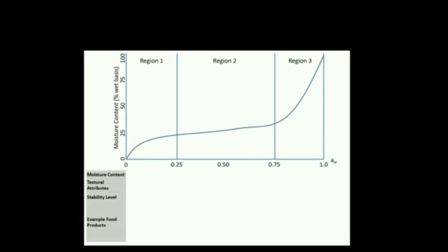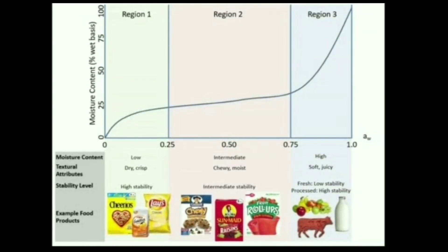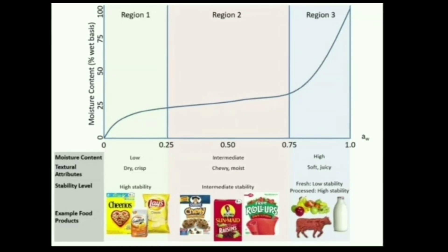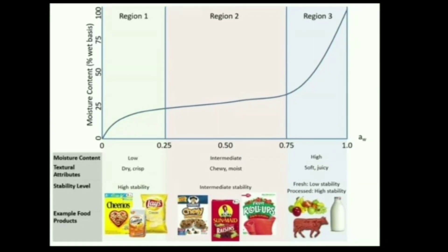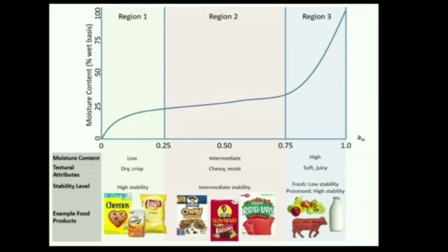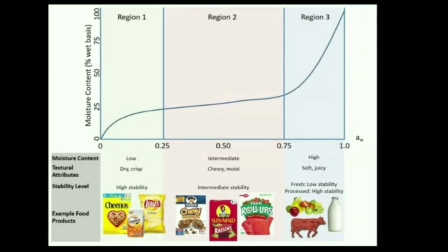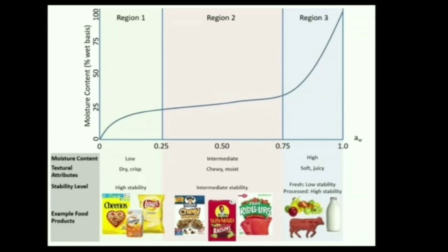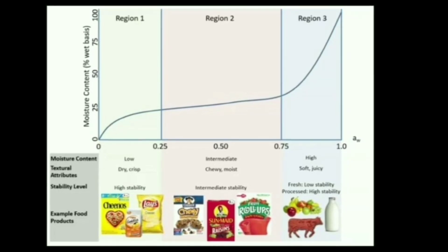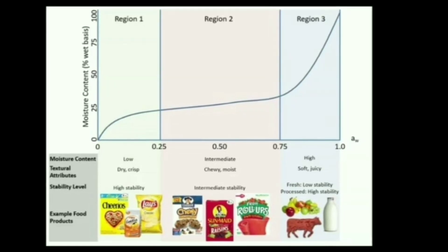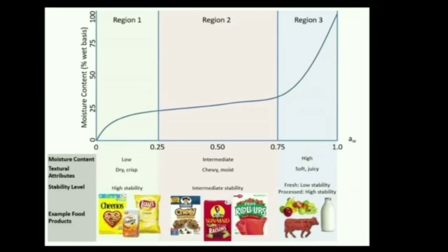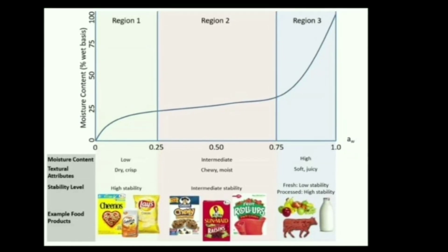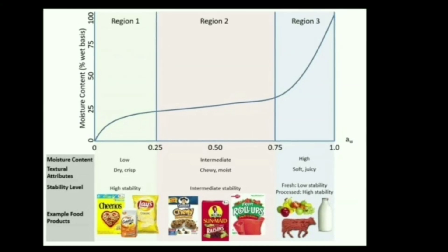Foods with low water activity tend to have a crunchy or crispy texture and can be stored at room temperature without any secondary method of preservation — they are shelf-stable and do not spoil quickly. Intermediate moisture foods have a chewy, moist texture which is relatively stable depending on processing techniques, while foods with high water activity tend to have a soft, juicy texture and are mostly perishable foods requiring processing or preservation to maintain stability.